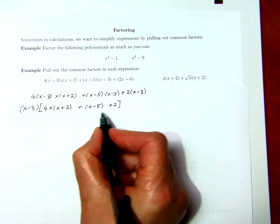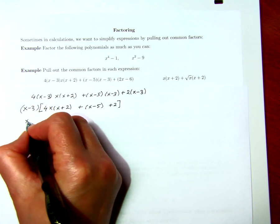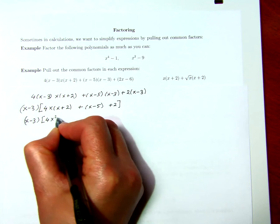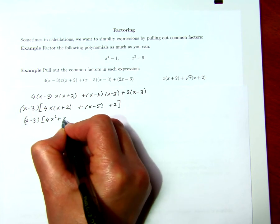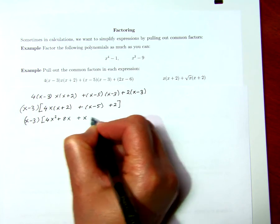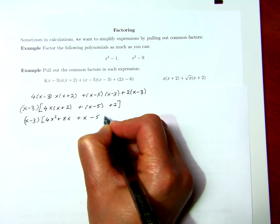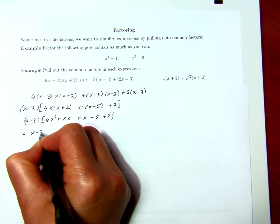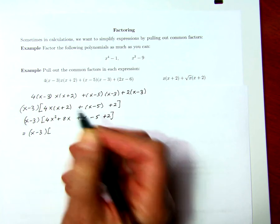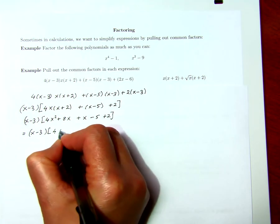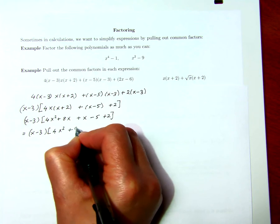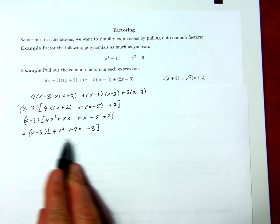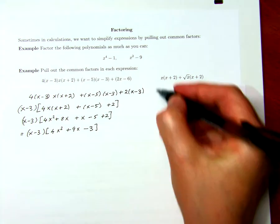We could tidy this up a little bit. That's x minus 3 times 4x squared plus 8x plus x minus 5 plus 2, and that's equal to x minus 3 times 4x squared plus 9x minus 3. We'll see how to factor quadratics in a little while.